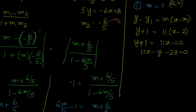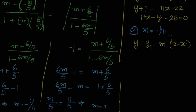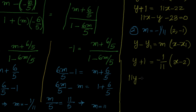Second case, m = -1/11: using y - y1 = m(x - x1) with point (2, -1), we get y + 1 = (-1/11)(x - 2). Simplifying: 11y + 11 = -x + 2, so x + 11y + 9 = 0.